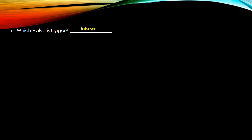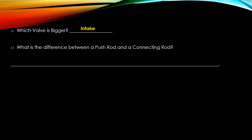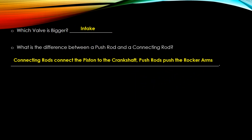There are only two kinds of valves — intake and exhaust. The intake valve is larger, because you want to bring in as much air-fuel mixture as possible. Regarding push rods versus connecting rods: a connecting rod connects the piston to the crankshaft; a push rod pushes the rocker arms. Connecting rod connects; push rod pushes.